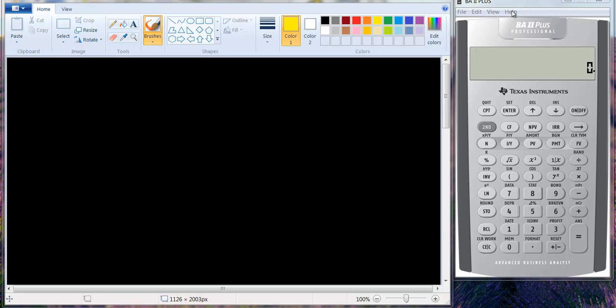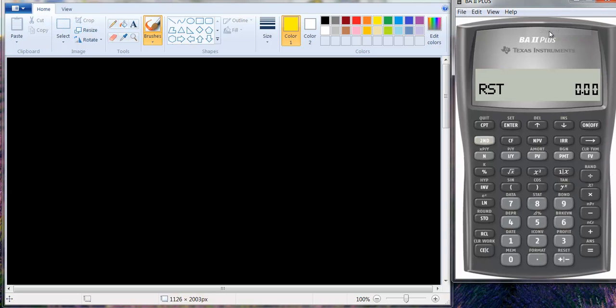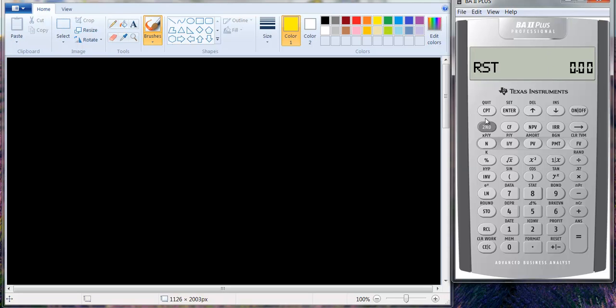Now, there are a number of calculators. This one is the Texas Instruments BA2+. Actually, this is a professional model, so it has a couple extra functions, but the one you have is basically the same. In fact, I can make it look like the one you have. I can switch it to the student version, but I just like the way the professional version looks.